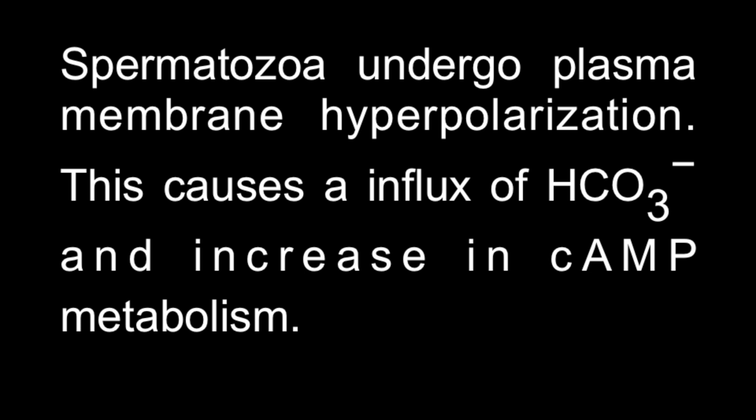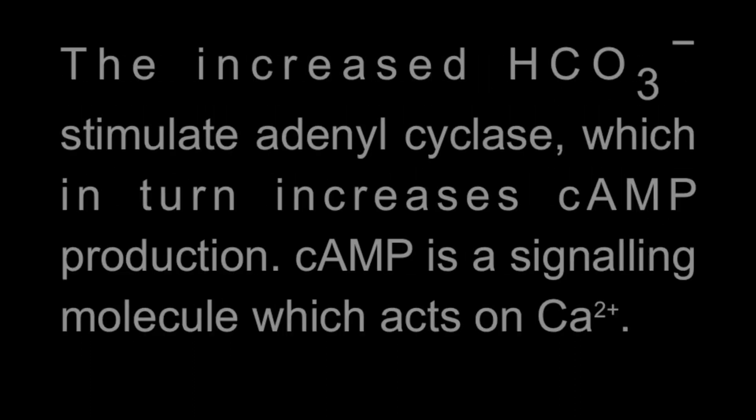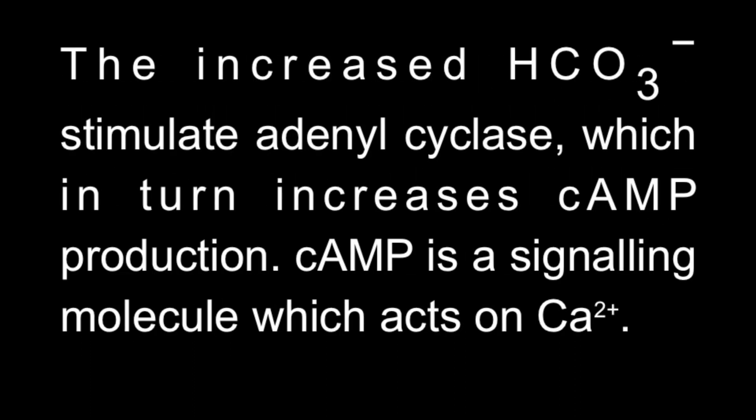Spermatozoa undergo plasma membrane hyperpolarization. This causes an influx of bicarbonate and increases in cAMP metabolism. The increased bicarbonate stimulates adenylyl cyclase, which in turn increases cAMP production. cAMP is a signaling molecule which acts on calcium.